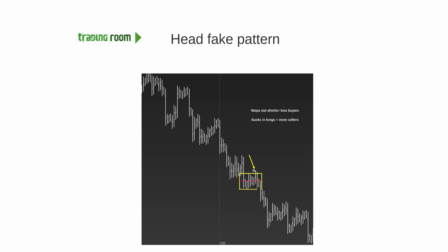So there are less buyers. You also create the dynamic of sucking in longs, because people think it's going up — let me buy it — creating some momentum to the upside. Well, anytime you have more longs, you have more sellers, right? After you get long, you have to sell that position. So that creates less buyers and more sellers, and anytime you have less buyers and more sellers, it's a complete lookout below moment.